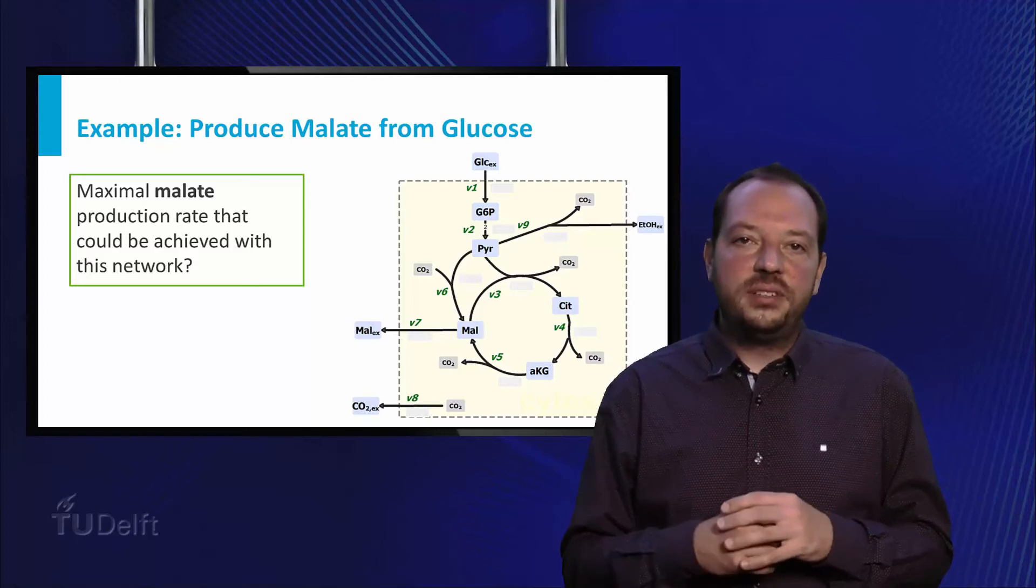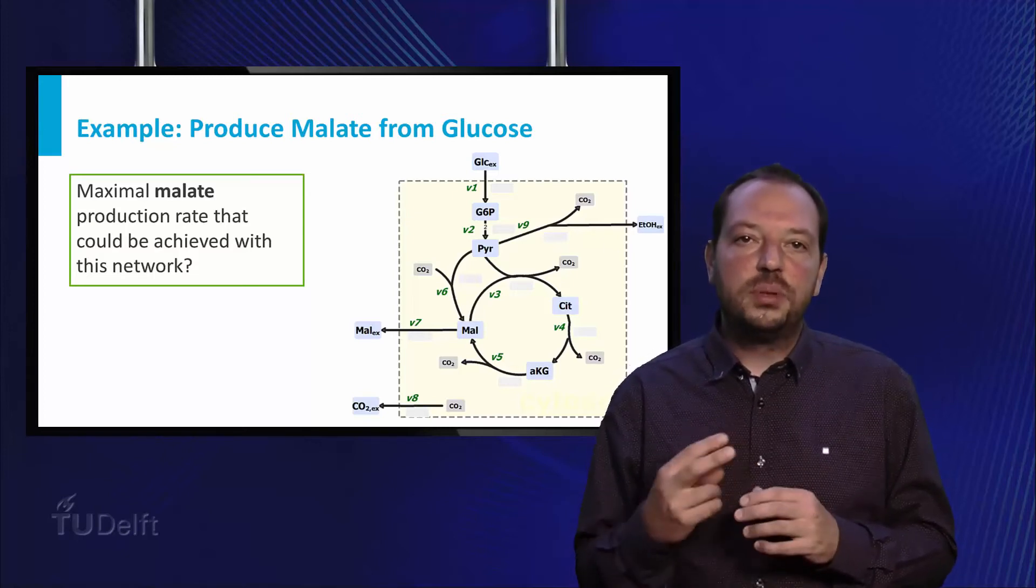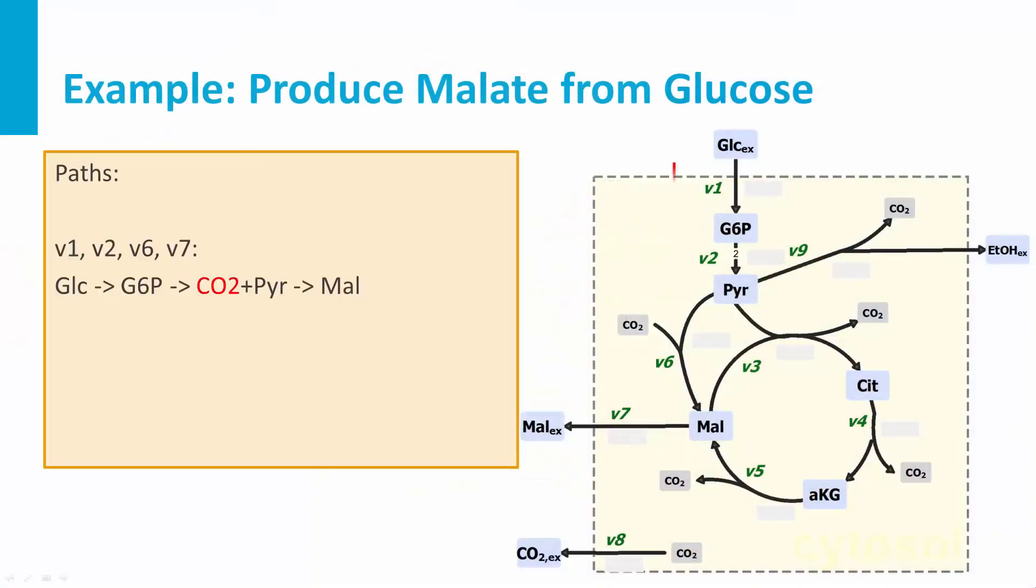Looking into this network, there seem to be two possible paths to malate. One going the route V1, V2, V6 and then V7, the other taking the cycle V1, V3, V4 until V7. Taking the cycle will actually not work. Running the cycle at the speed of 1 will consume one malate and one pyruvate at the start and produces one malate, thus nothing will be left over to export.